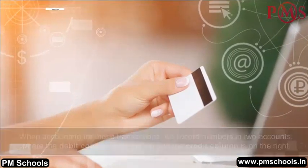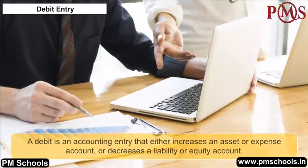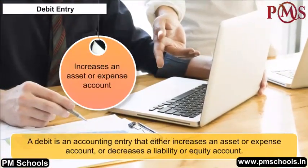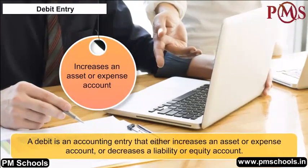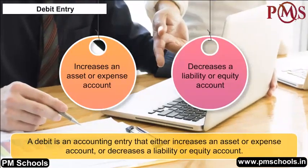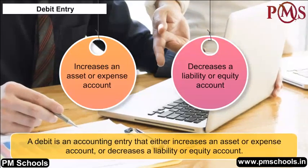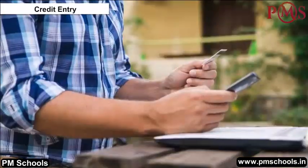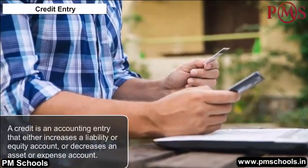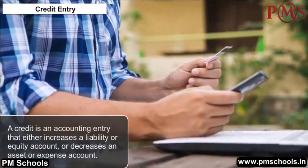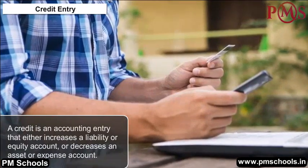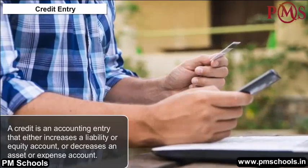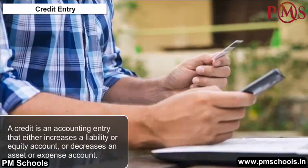A debit entry is an accounting entry that either increases an asset or expense account, or decreases a liability or equity account. It is positioned to the left in an accounting entry. A credit entry is an accounting entry that either increases a liability or equity account, or decreases an asset or expense account. It is positioned to the right in an accounting entry.